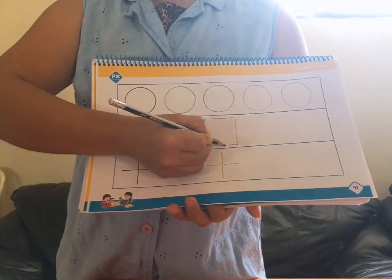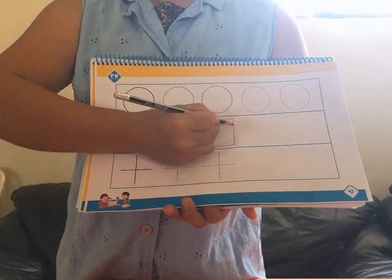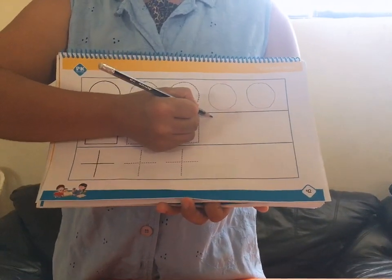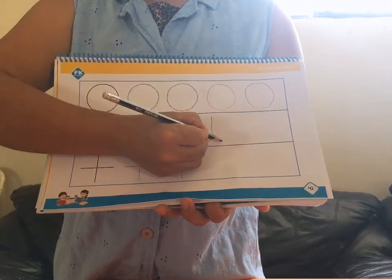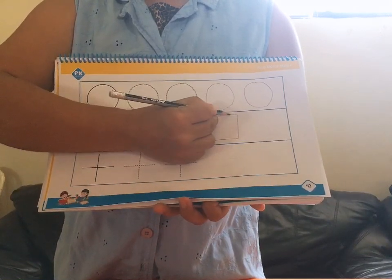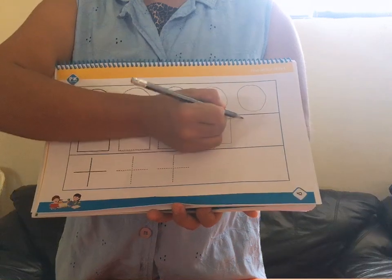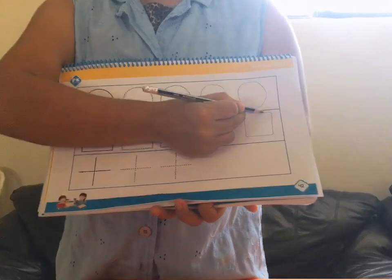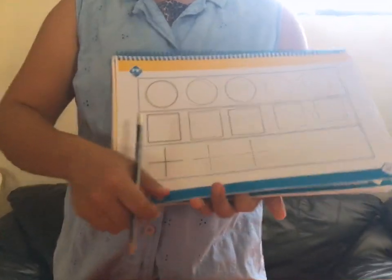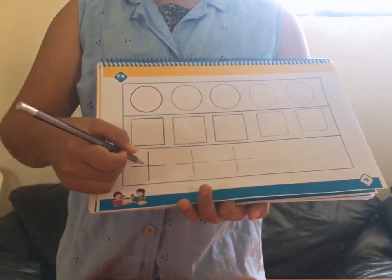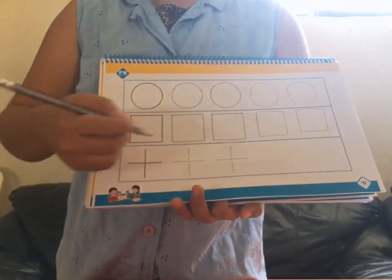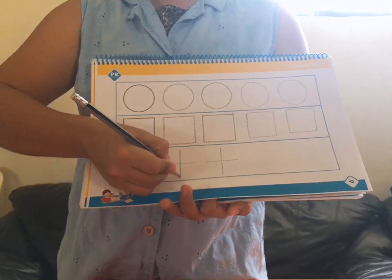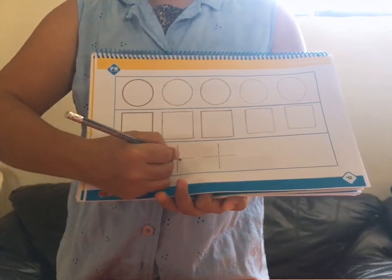Now let's do the next one, this cross. So you start from top: down. From left to right. Top, down, left, right. Top, down, left, right. Top, down, left, right.